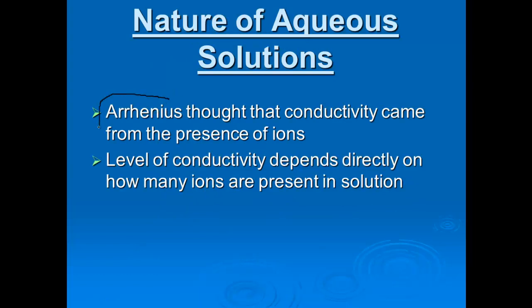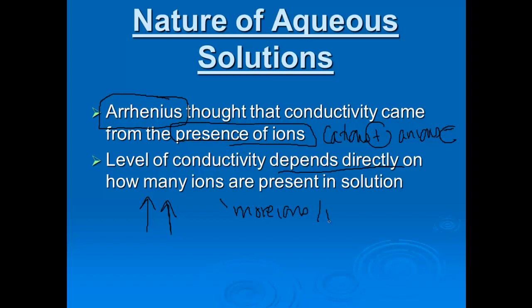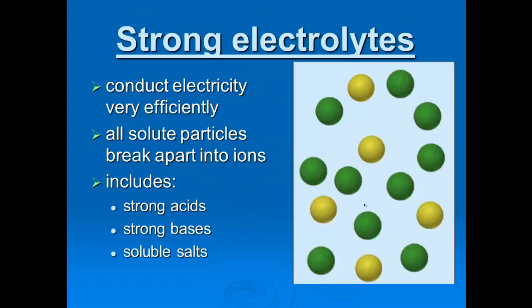Now, nature of aqueous solutions. One of the first guys to study solutions was Arrhenius. Arrhenius thought that conductivity came from the presence of ions. Now remember, ions are your charged particles. You've got your cations that are positively charged. Your anions that are negatively charged. And the level of conductivity does depend directly. Remember, direct relationship means if one goes up, the other goes up, on how many ions are present. So in other words, more ions, more conductivity. And vice versa.